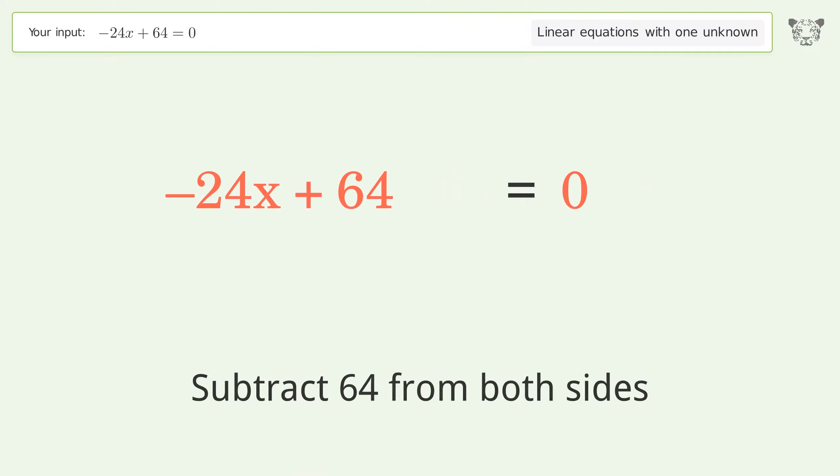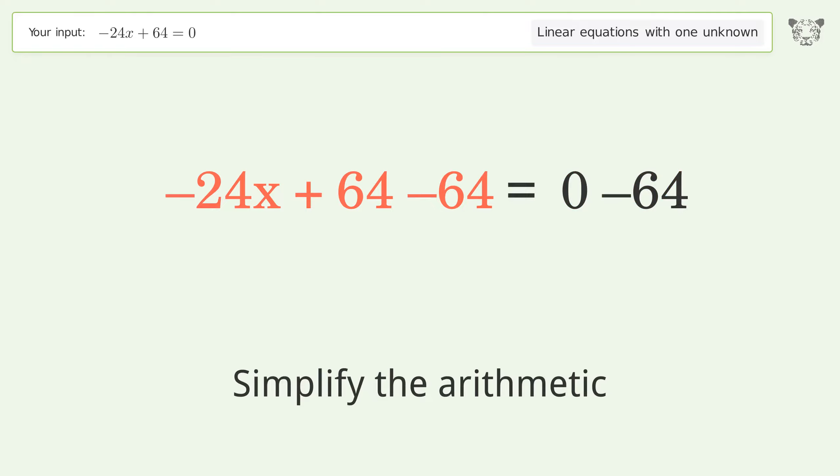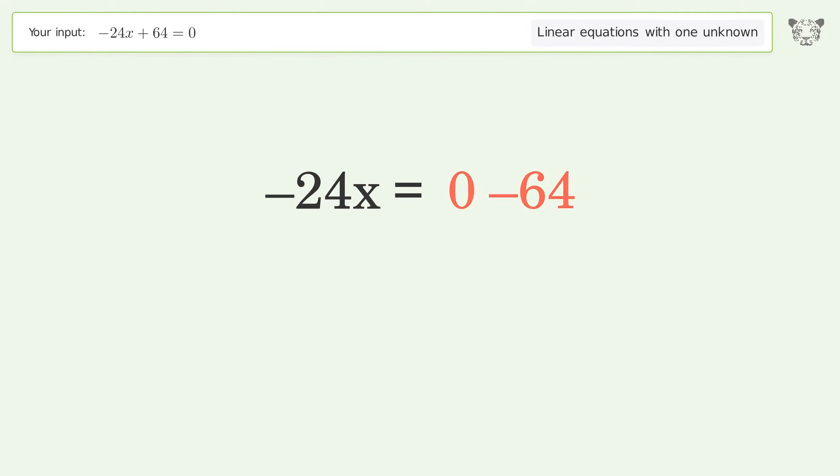Simplify the arithmetic. Isolate the x. Divide both sides by negative 24.